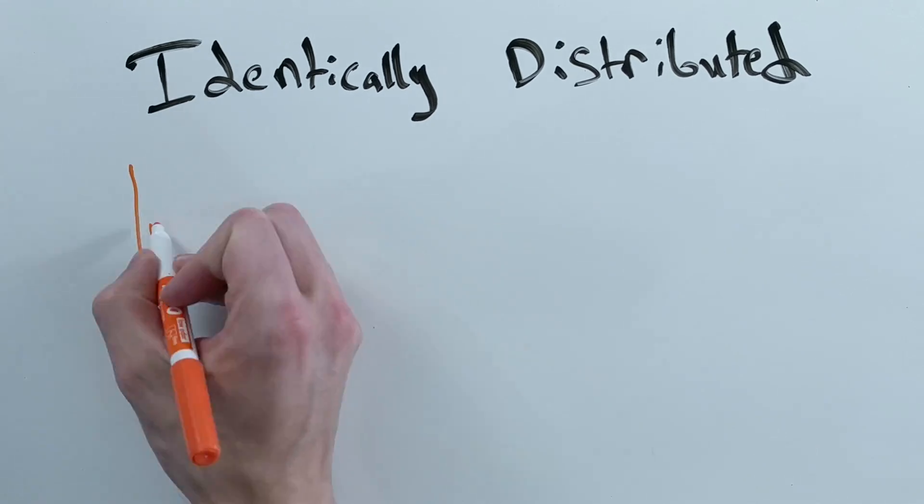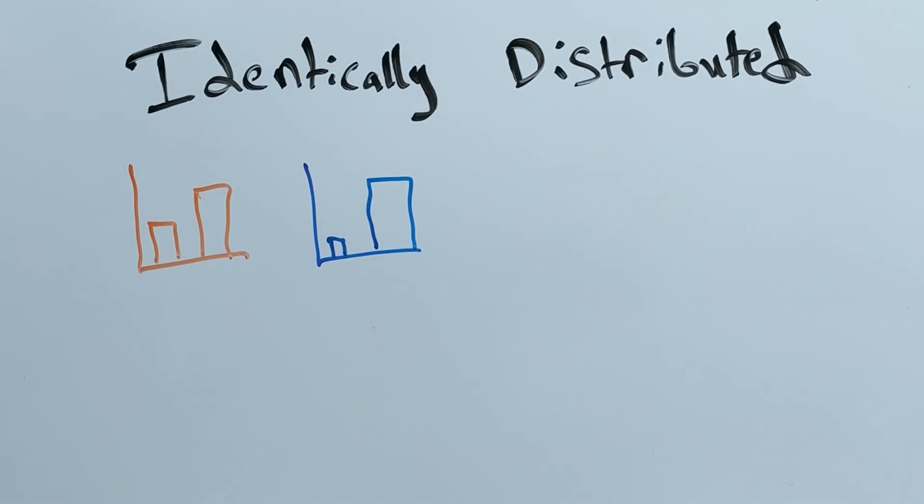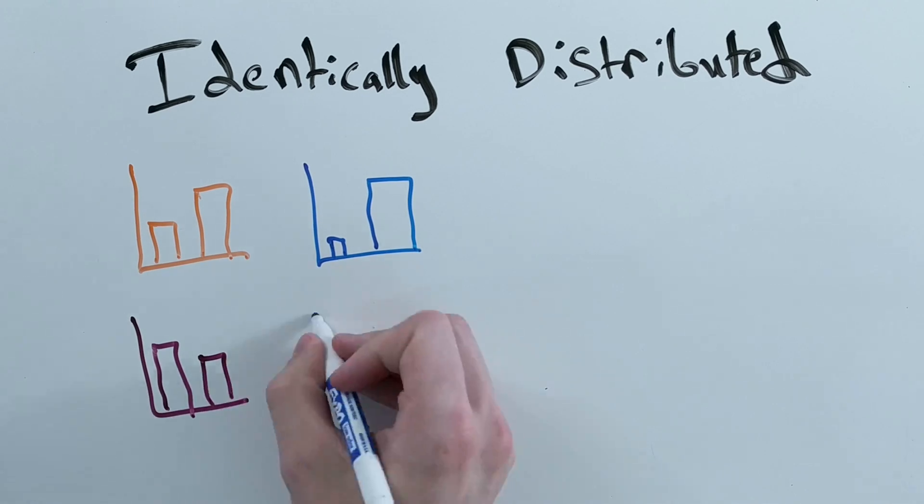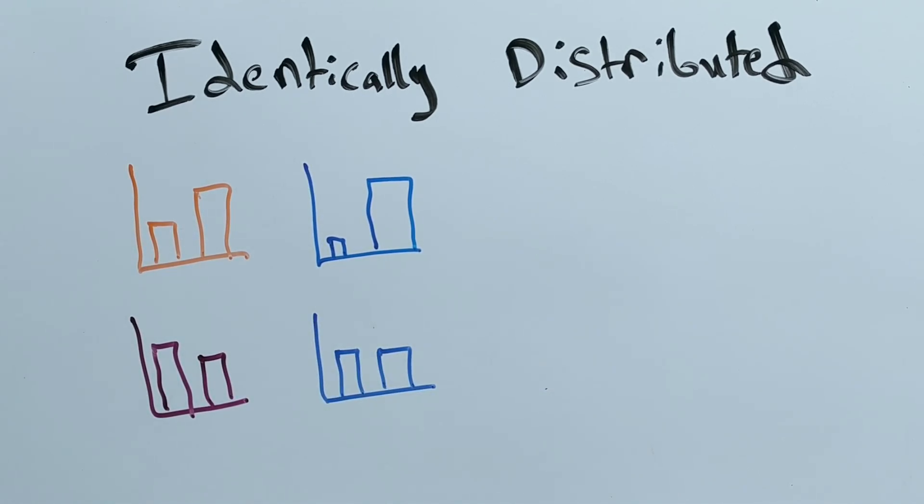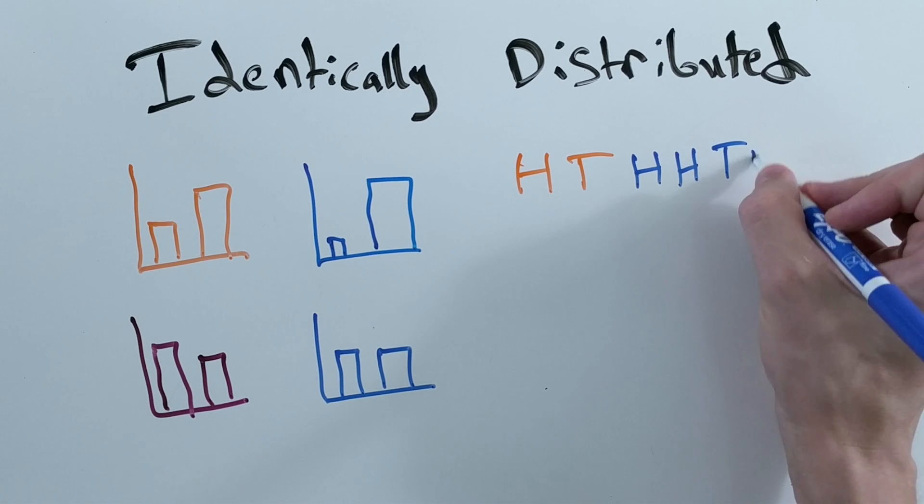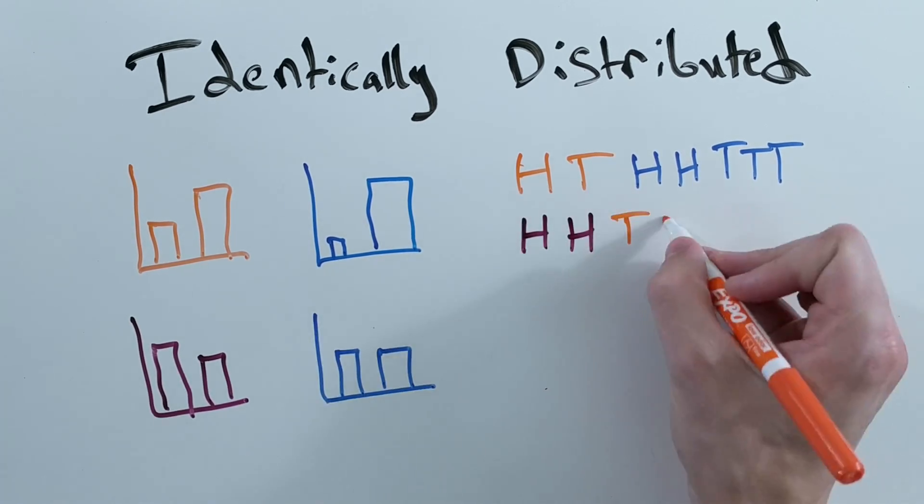On the other hand, if you had a collection of weighted coins where each coin had a different probability of flipping heads or tails, and used those to generate data about some coin flip, the data would not be IID.